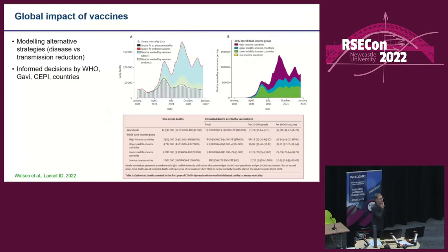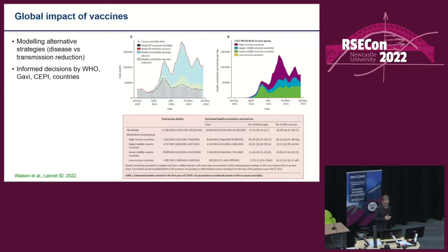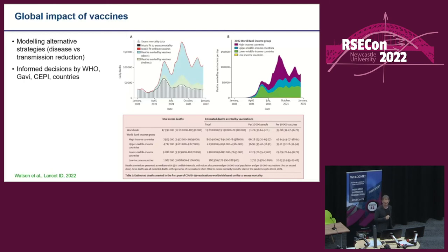We published work earlier this year, which got a lot of publicity, estimating that of the order of 17 to 19 million lives have been saved through the rollout of COVID vaccination. It's always difficult because of the counterfactual — would we have stayed in lockdown, or let the virus rip? We used a fairly conservative intermediate counterfactual. I'd refer you to the paper for details — it's a nice analysis.